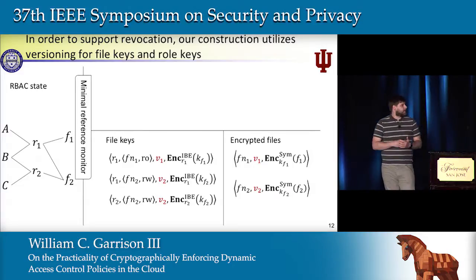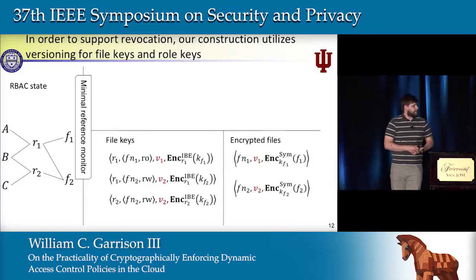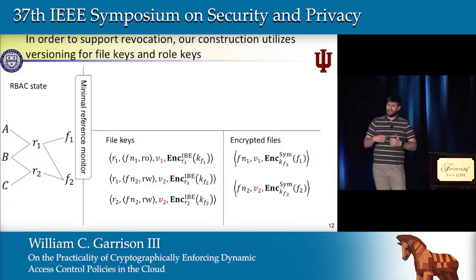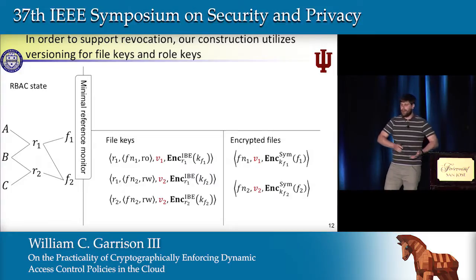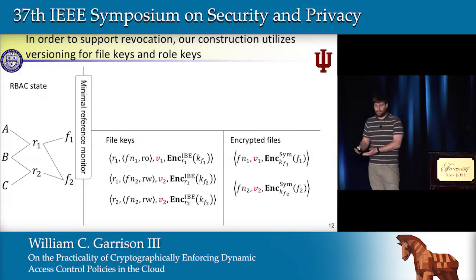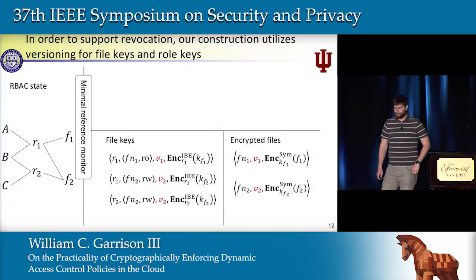So now when a user wants to decrypt a file, they'll have to make sure they get the correct key bundle depending on the version. And when we want to revoke access to a file from a role, we'll generate a new file key, encrypt it to all the roles who should continue to have access, and then upload all of those adjusted key bundles onto the server.